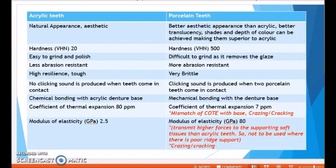What are the differences between acrylic and porcelain teeth? Acrylic teeth have a natural appearance but porcelain has better aesthetics — better translucency, better shape, shades, and depth of color — making porcelain superior in aesthetics. Regarding hardness, acrylic teeth have a Vickers hardness number of 20, while porcelain teeth have a Vickers hardness number of 500, making porcelain significantly harder. Acrylic teeth are easy to grind and polish, whereas porcelain teeth are difficult to grind as it removes the glaze and they are harder.